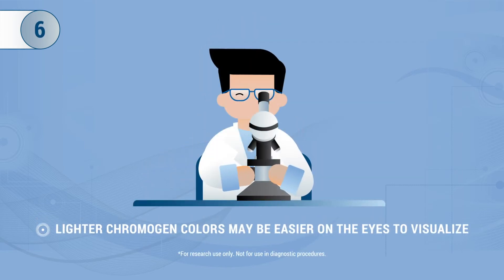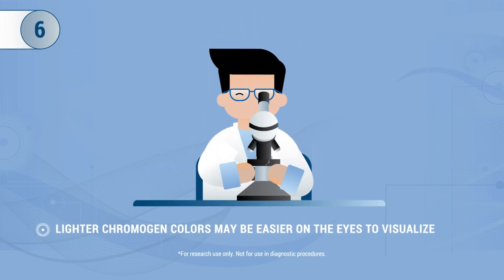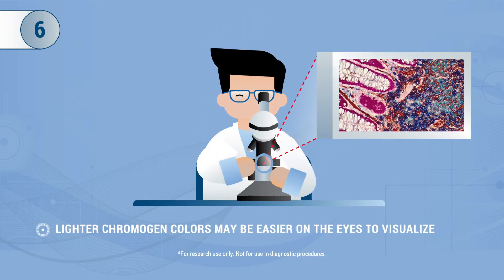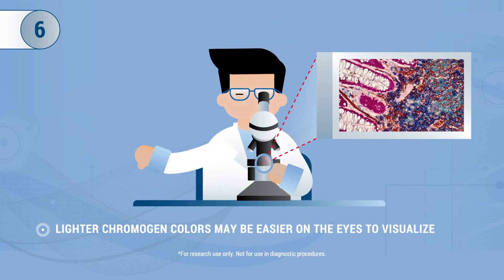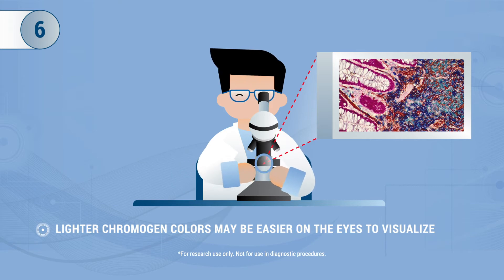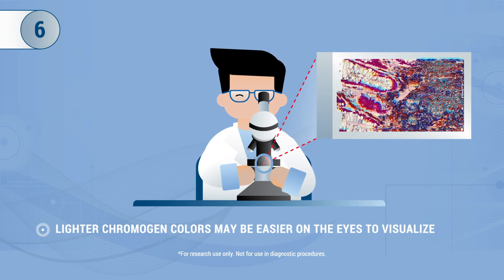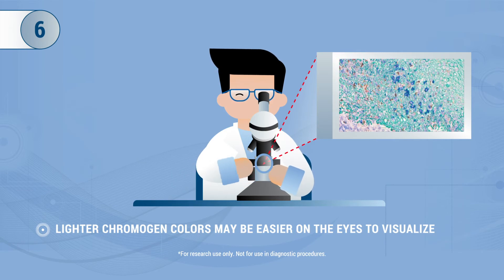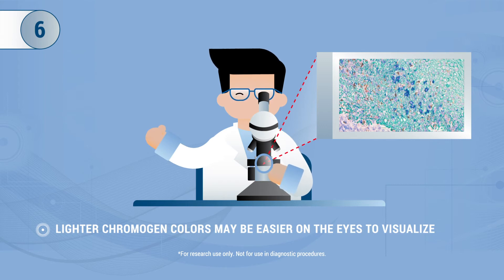Tip 6: If possible, consider keeping the chromogen colors lighter, as it may make it easier to visualize and interpret when there are multiple markers closely positioned together.